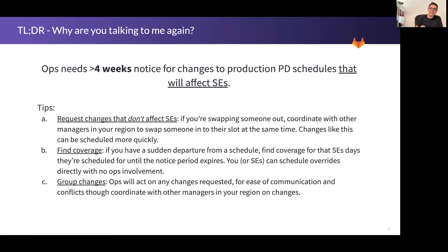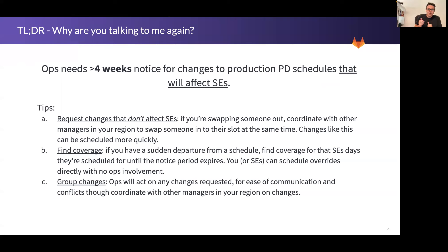The big change you really need to be aware of is just one sentence: ops needs at least four weeks notice for changes to production PagerDuty schedules that will affect SEs. This is a significant change — previously, especially for smaller regions, you might change things quite quickly. But it's really important that we give SEs a large heads-up for any changes that are going to affect when they're on call, especially for pre-planned PTO. For example, if someone specifically took Christmas off and suddenly finds themselves on call on Christmas, that would greatly affect them. The four-week rule applies only to production PD changes that are going to affect SEs.